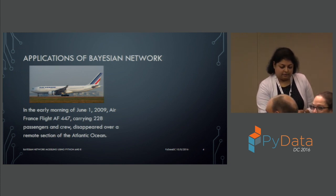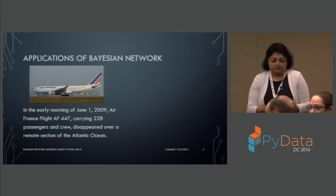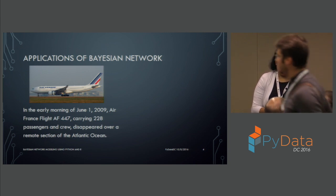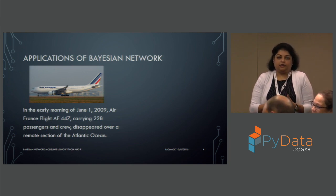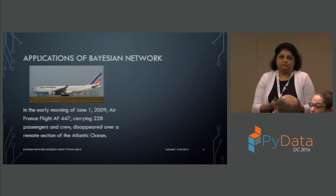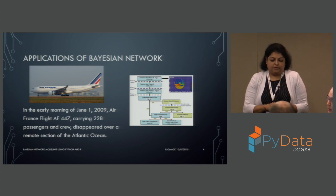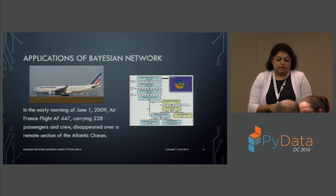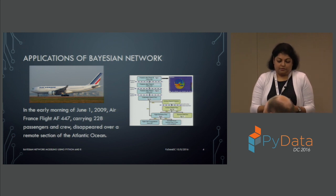Let's first take a look at the applications of Bayesian network. The very first application is a somber example: in the early morning of June 1, 2009, Air France Flight AF447 went missing with 228 passengers and crew, disappearing over the Atlantic Ocean. They tried multiple techniques but could not find the location of the debris, until they decided to use Bayesian network modeling — and it worked successfully. This is the model that was used. As you can see, there's mention of posterior and prior in this chart, but don't worry about it right now — we'll cover that later. It involves multiple parameters on which the priors and posteriors have been taken. They learned from whatever efforts did not work and used that to their advantage in making the prediction.